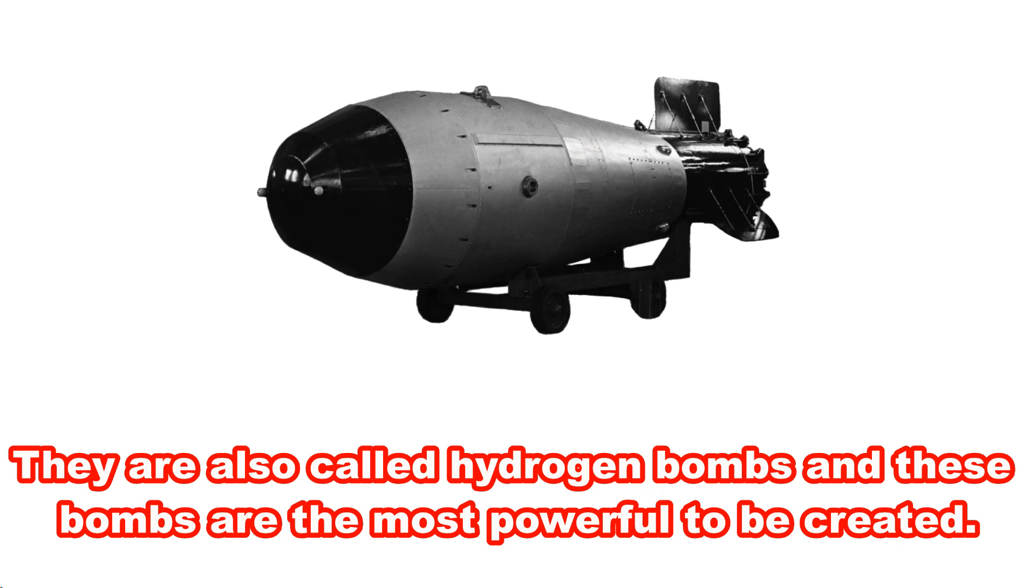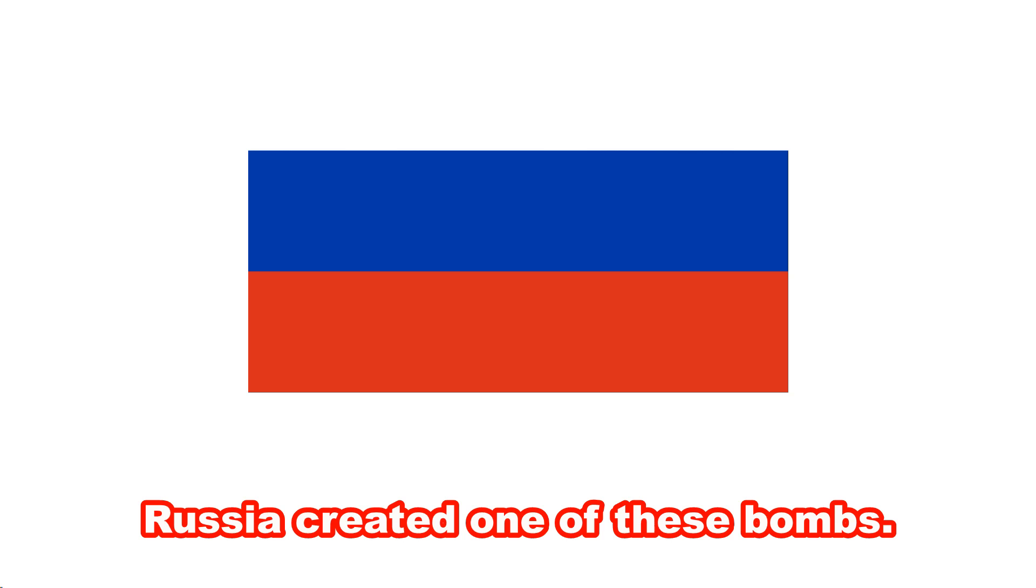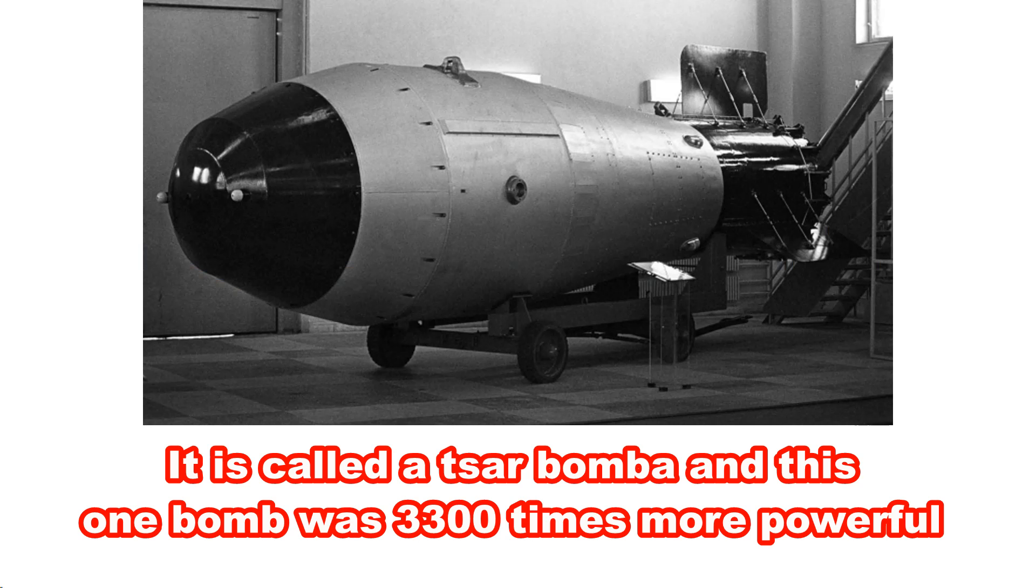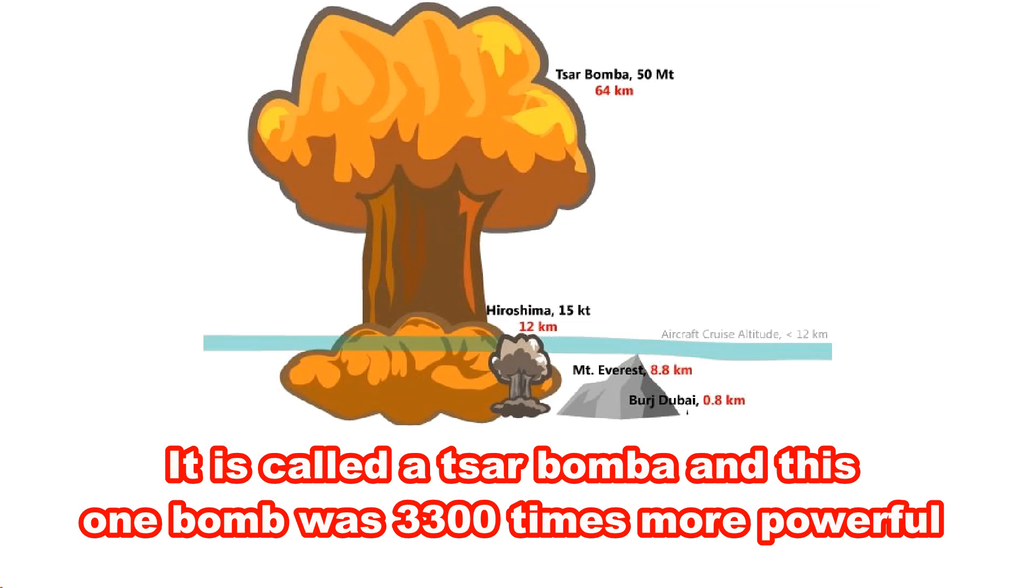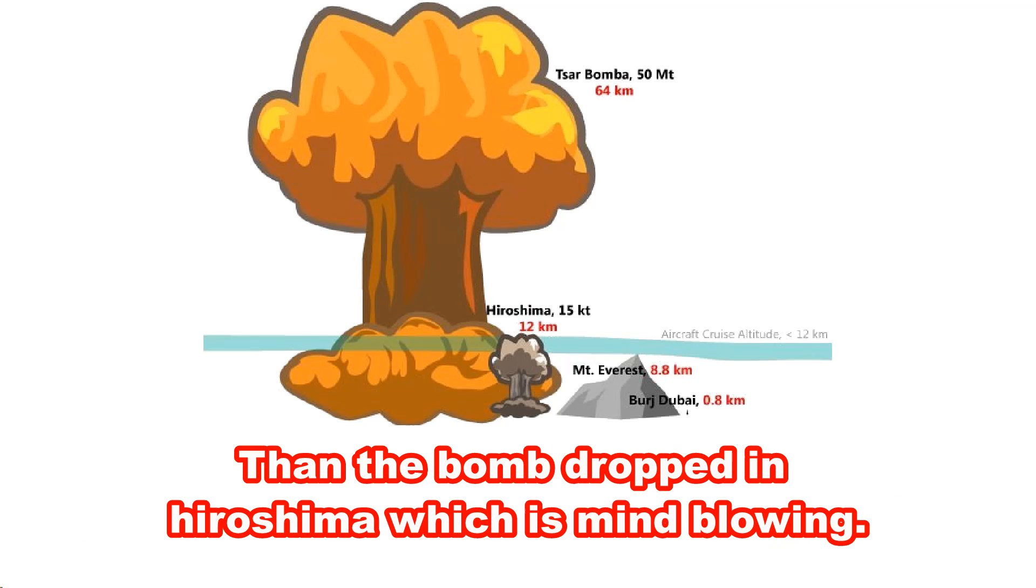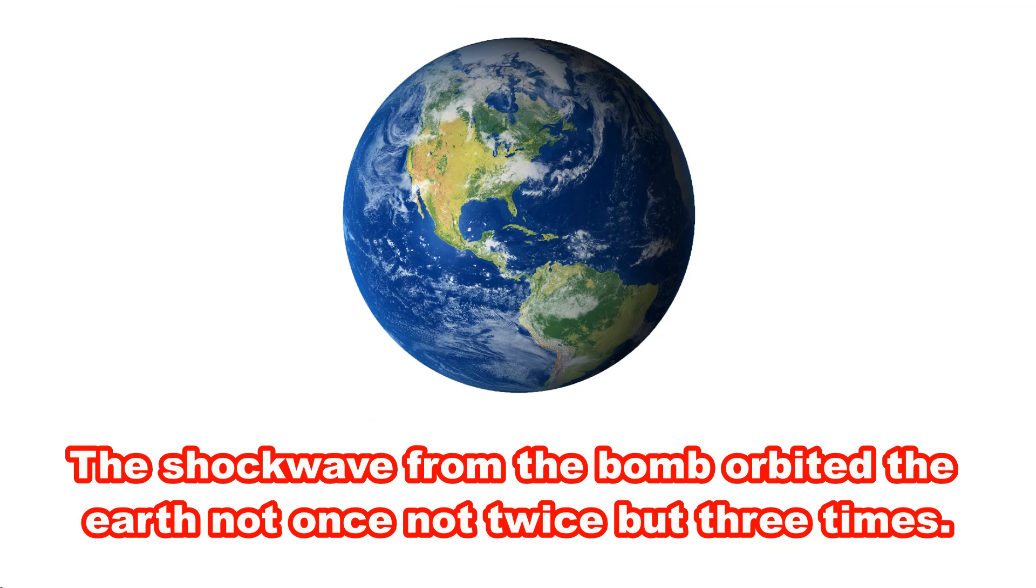They are also called hydrogen bombs and these bombs are the most powerful ever created. Russia created one of these bombs. It is called the Tsar Bomba and this one bomb was 3,300 times more powerful than the bomb dropped in Hiroshima, which is mind blowing. The shockwave from the bomb orbited the earth not once, not twice, but three times.